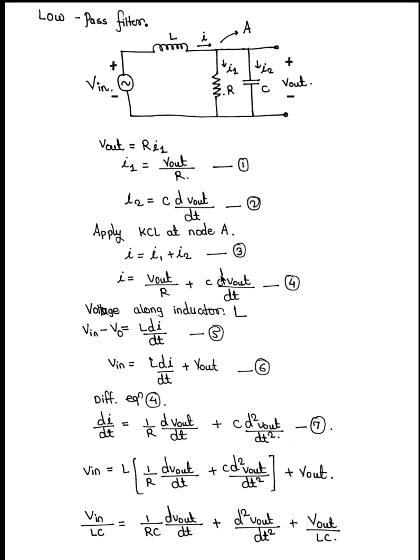We will consider passive filters. The first one is the low pass filter and the second one is the notch filter. The low pass filter only allows low frequencies to pass and stops high frequencies.